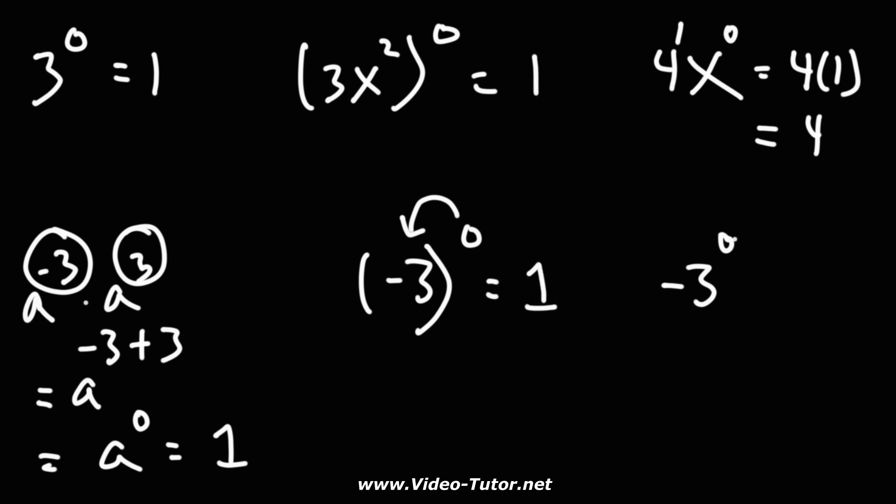For the next one, the zero only applies to the three and not the negative sign. This is equivalent to writing it this way. So this will be negative and then times one, which is negative one.